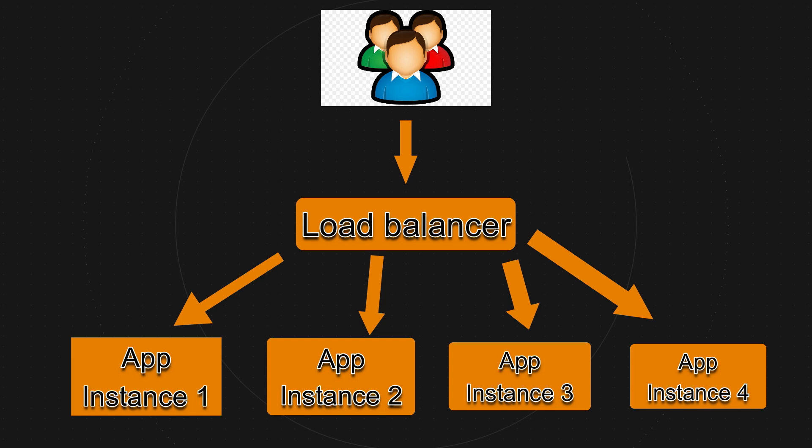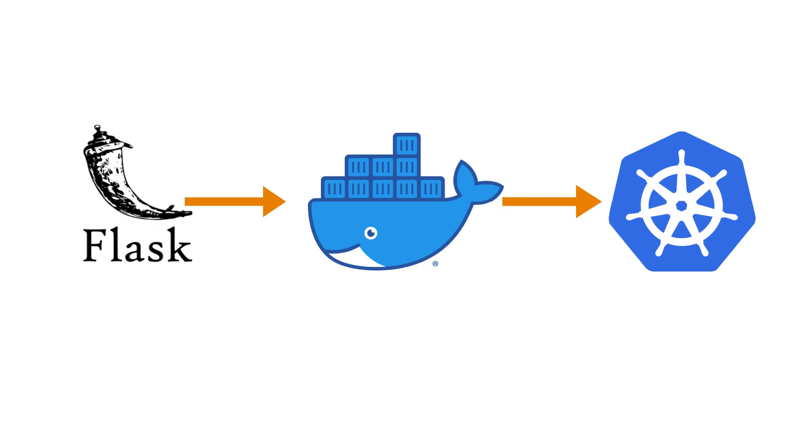Kubernetes has a load balancer so that users accessing your application don't directly hit the app URL. Instead they call the load balancer, which distributes hits across multiple instances so Kubernetes can scalably serve the application. Even if one app instance crashes, Kubernetes automatically creates another instance. This is the most scalable type of deployment we have.